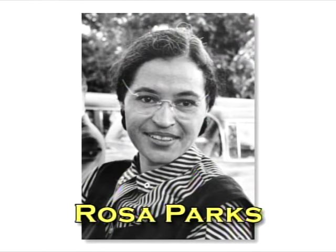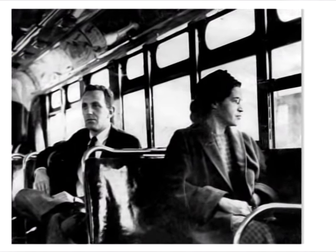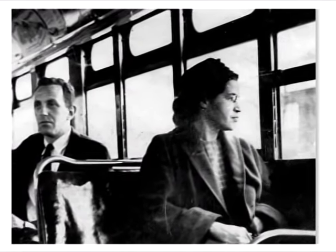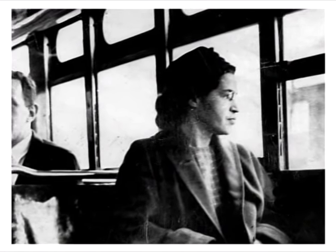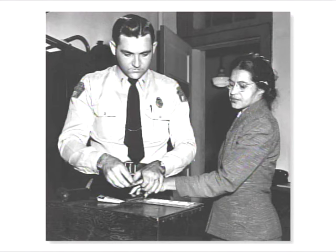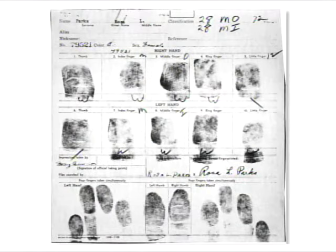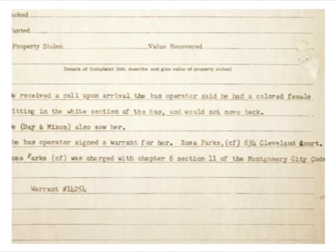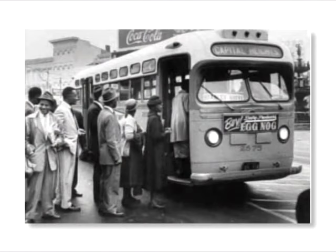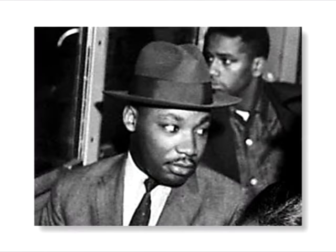Rosa Parks was a 42-year-old black seamstress in Montgomery, Alabama. In December of 1955, she was riding the bus home when a white man demanded she get up and give her seat to him, as Jim Crow laws mandated. She quietly replied, 'Not today.' Her feet were tired. She was arrested, and the black community in Montgomery was outraged. Within a week, a boycott was called against the Montgomery Bus Service, which had a black ridership of nearly 70 percent. The boycott lasted more than a year before the U.S. Supreme Court upheld that segregation on public transportation violated the 14th Amendment. The bus boycott had succeeded, led by a young black minister named Martin Luther King.